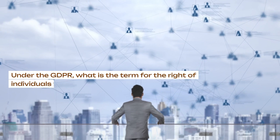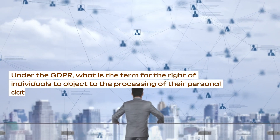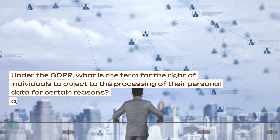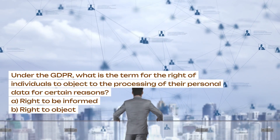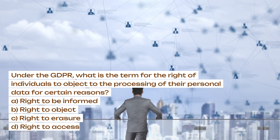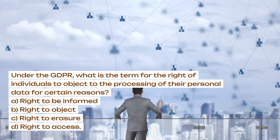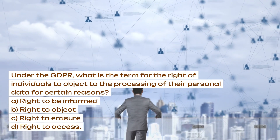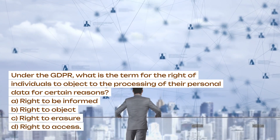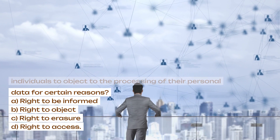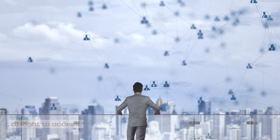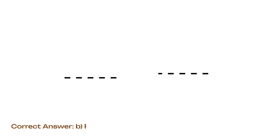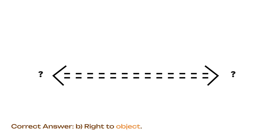Under the GDPR, what is the term for the right of individuals to object to the processing of their personal data for certain reasons? A. Right to be informed. B. Right to object. C. Right to erasure. D. Right to access. Correct answer: B. Right to object.